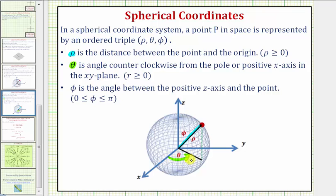This is the same angle we find in polar coordinates in two dimensions. And phi is the angle between the positive z-axis and the point — which is this angle here.